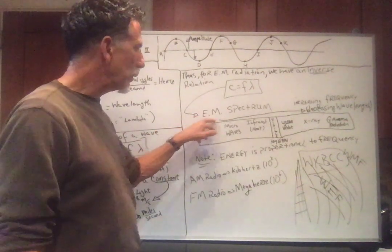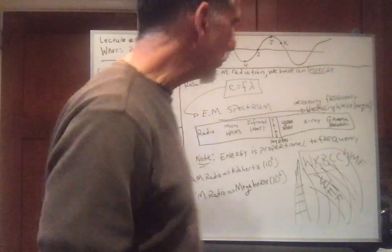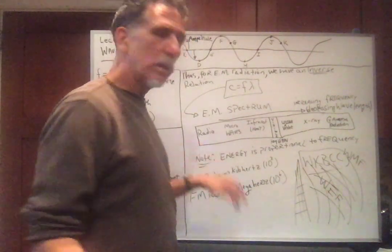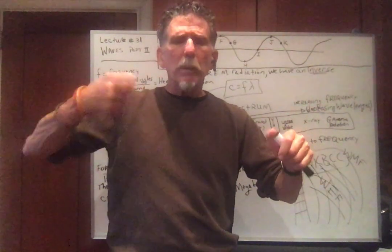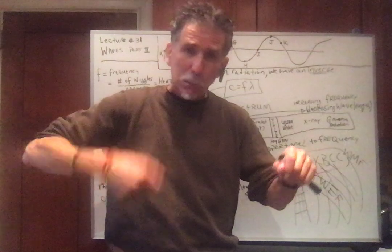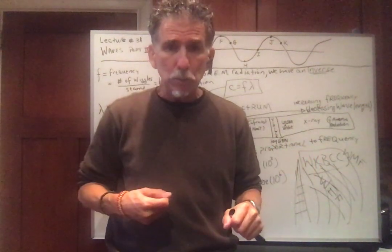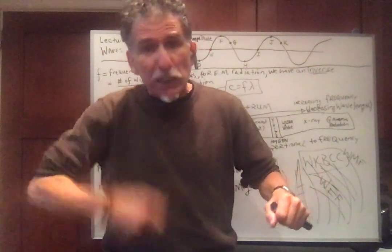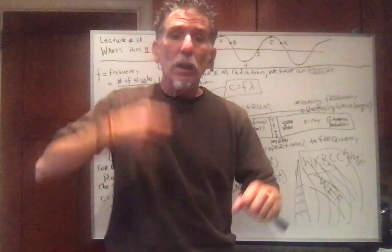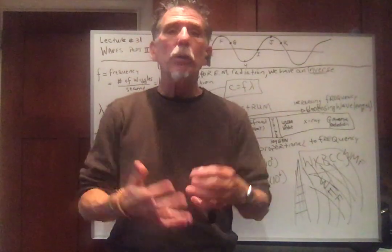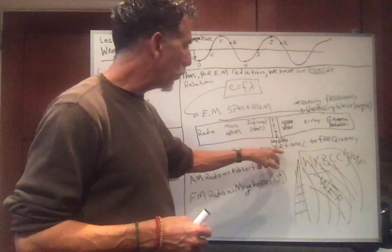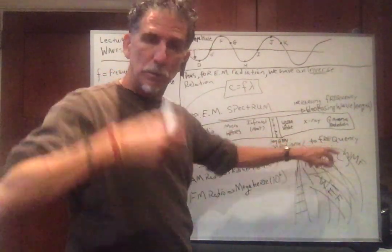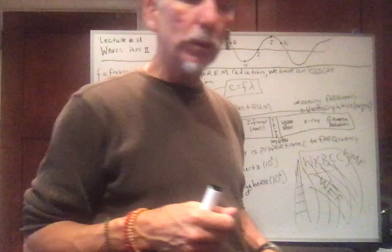And here, this leads us to what's called the electromagnetic spectrum. Now, first, let me say this. Suppose I have a wave and I have a string and I wiggle it. By wiggling it, I'm putting in energy. If I wiggle it even faster, I think it's clear, the faster I wiggle it, the more energy I put in. So we have energy is proportional to frequency. The faster it wiggles, the more energy the wave has.